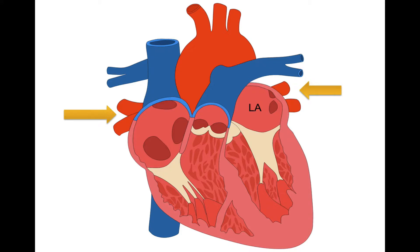Blood flows through the pulmonary veins, indicated by the yellow arrows — two on the left and two on the right — and empties into the left atrium. At this point the blood is highly oxygenated because it's just coming back from the lungs. The pulmonary trunk bifurcates into right and left pulmonary arteries, taking blood to the lungs to receive oxygen, and ultimately returning through these pulmonary veins.